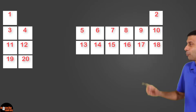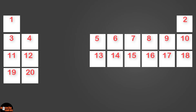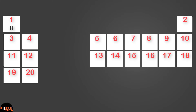Next, let's start filling in the elements in our table. Do you know which is the first element with atomic number 1, with just one proton in the nucleus? That's right, the correct answer is hydrogen. Let's put the symbol H in the first box. Next, with atomic number 2, we have helium. And now let's go down to the second row.